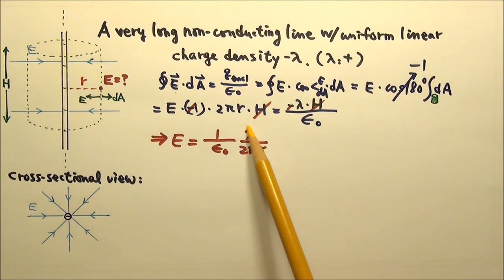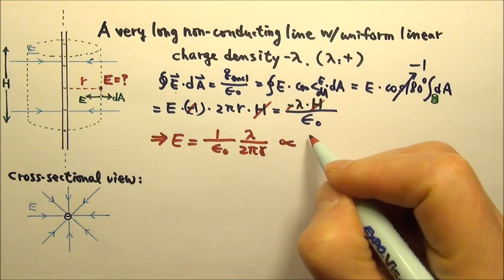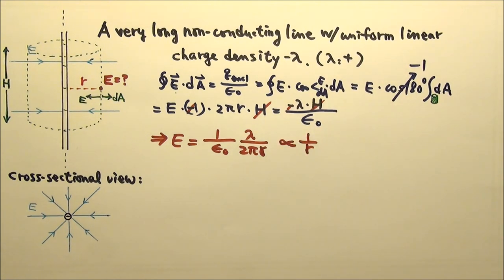With all these being constant, we can say the electric field is proportional to 1/r. It makes sense for the electric field to be proportional to 1/r. First, the farther away, the weaker the field.